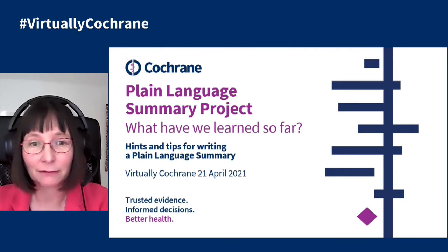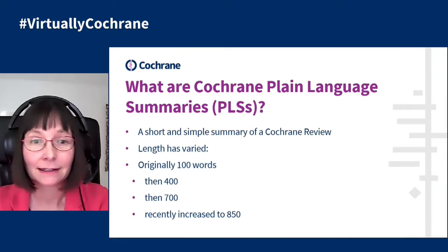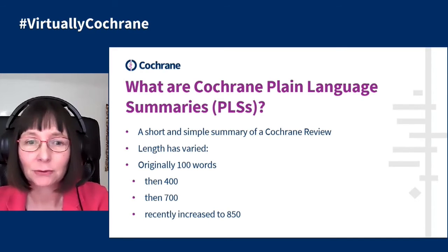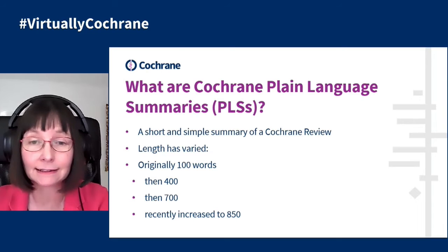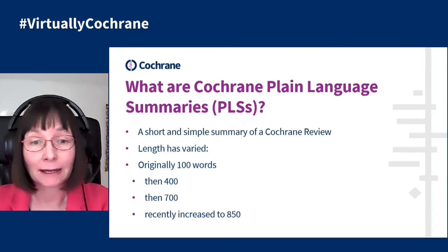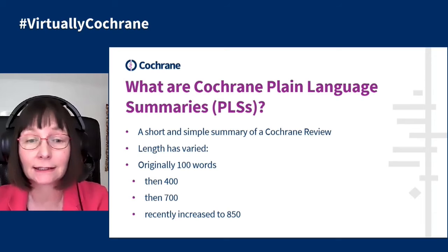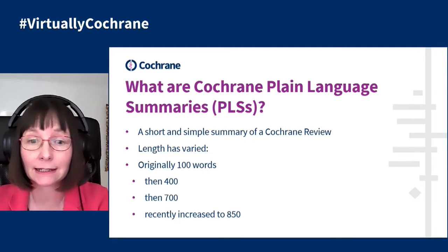Hello, I'm here to give you a brief introduction to plain language summaries in general and to Cochrane's plain language summary project in particular. So let's start with: what are Cochrane plain language summaries? They're pretty much what it says on the tin — a short and simple summary of a Cochrane review. All Cochrane reviews are published with a plain language summary, or PLS, as they're frequently referred to. They were first introduced about 20 years ago. The length, format and content has varied over the years. They started with a word limit of 100, which was then increased to 400 and 700, and most recently increased to 850.